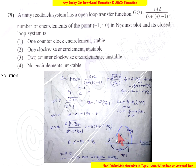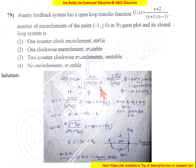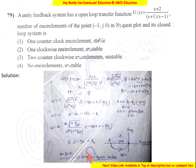The number of encirclements in this Nyquist plot, N, equals 1. Using N equals P minus Z: N is 1, P (number of open loop right half poles) equals 1, so Z (closed loop right half poles) equals 0. This means the closed loop system is stable. So the number of encirclements is 1 and the system is stable — option 1 is correct.